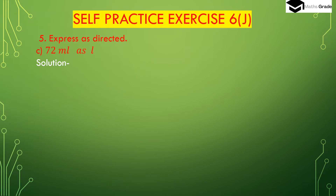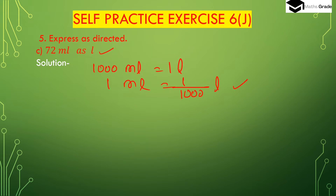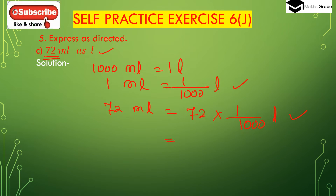Now question number 3rd, bit (c): express 72 ml as liter. We have to convert 72 ml to liter. We know 1000 ml is 1 liter, so 1 ml will be 1 divided by 1000 liter. So 72 ml will be 72 multiplied by 1 divided by 1000 liter, which is 72 divided by 1000 liter. In the denominator 1000 there are 3 zeros, and in the numerator 72 has only 2 digits.